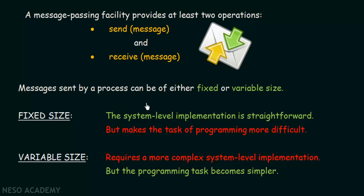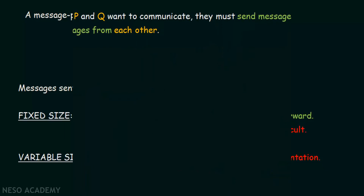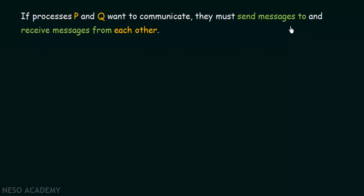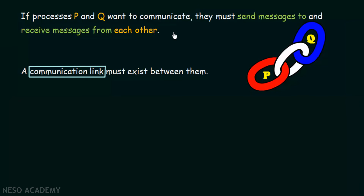Those are the two kinds of message sizes: fixed and variable. Now if processes P and Q want to communicate, they must send messages to and receive messages from each other. P and Q must be able to both send and receive messages. To make this happen, a communication link must exist between them. Unlike shared memory, where communication occurred by writing and reading a shared region, in a message passing system there must be a communication link between the two processes that want to communicate.